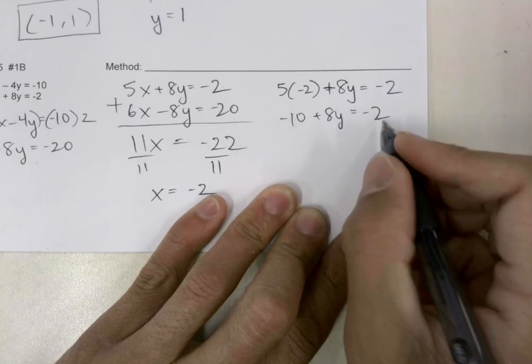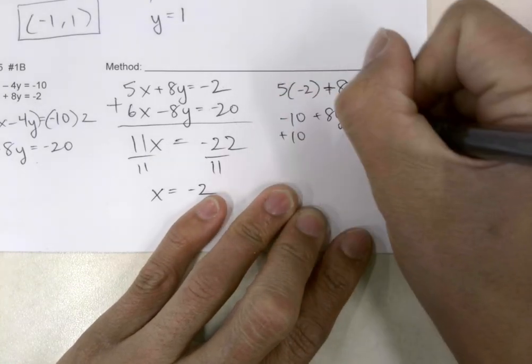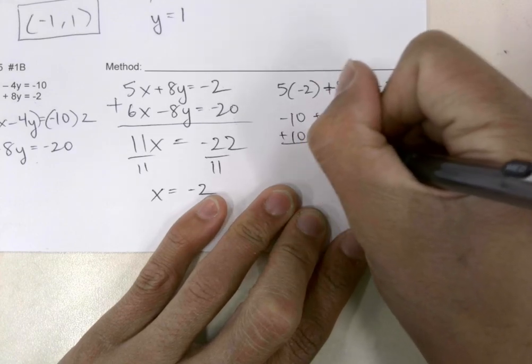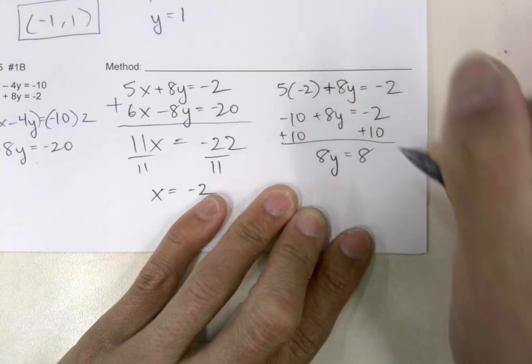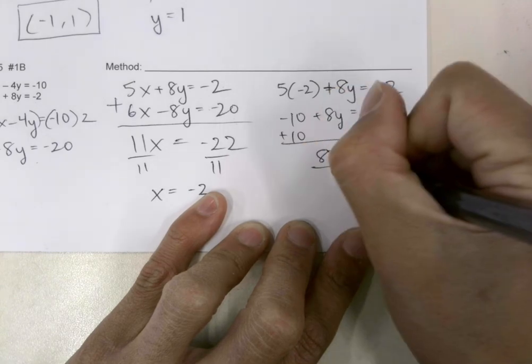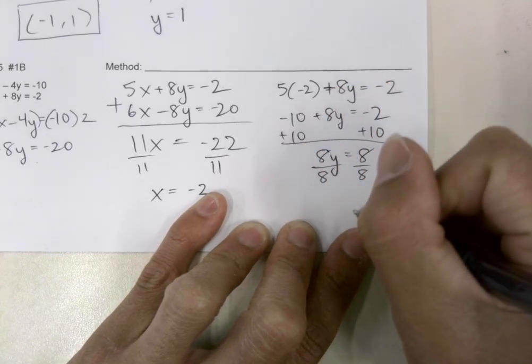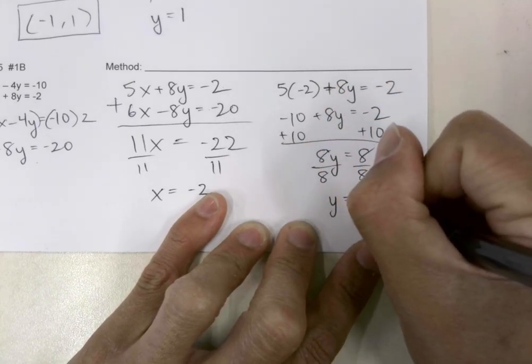I can move the negative 10 over by adding 10 to both sides of the equal sign, and then I get 8y equals 8. I'll divide by the coefficient in front of the y, and I'll get y equals 1.